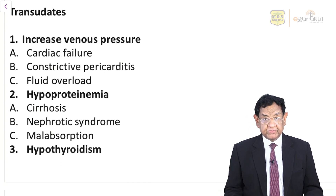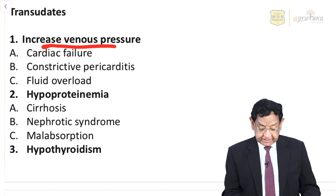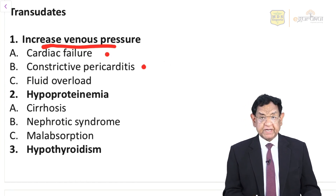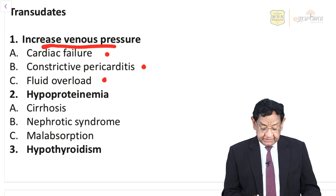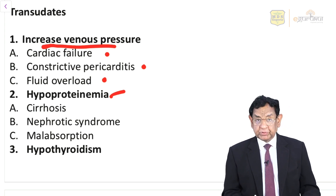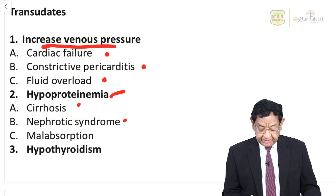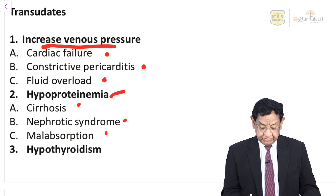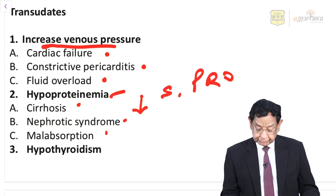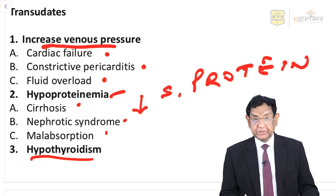Now, transudate — what are the causes? This can be due to increased venous pressure, like congestive heart failure, constrictive pericarditis, or fluid overload. It could also be any condition where serum protein is low — hypoproteinemia — like cirrhosis of the liver, nephrotic syndrome, or any condition leading to malabsorption which reduces serum protein. Hypothyroidism also leads to transudate.